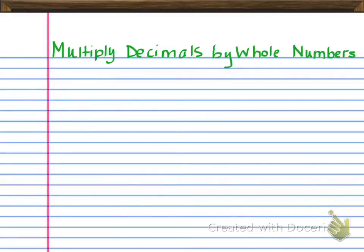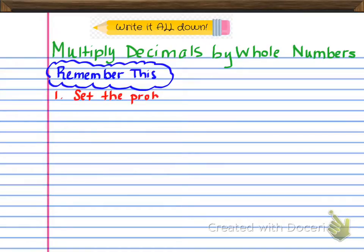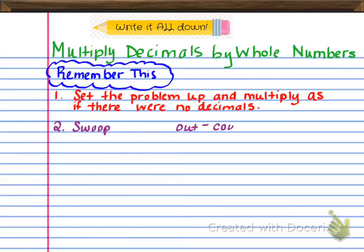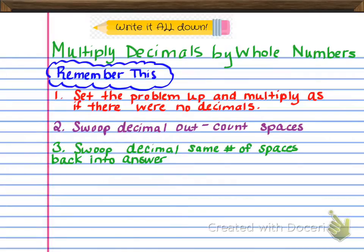Let's go ahead and take a look at what we have here. The title of your page should say multiply decimals by whole numbers. I've put a 'remember this' section here because there are just a few things to remember about each process. The three things are: first, set the problem up and multiply as if there were no decimals; second, swoop the decimal out and count the spaces; and third, swoop the decimal the same number of spaces back into the answer.